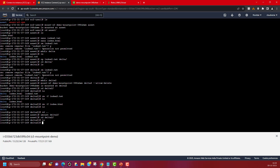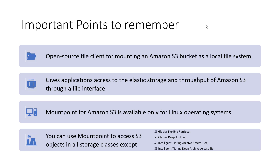That's it for today's demonstration. We saw Mount Point for Amazon S3 — what all it can do and what all it cannot. Key points to remember: it is an open source file client that helps us mount an S3 bucket as a local file system. It gives applications access to the elastic and durable storage of S3 through a file interface. Mount Point for S3 is available only for Linux-based operating systems as of now. Also note that certain S3 storage classes are not supported, including Glacier Flexible Retrieval, Glacier Deep Archive, Intelligent Tiering Archive, and Intelligent Tiering Deep Archive.